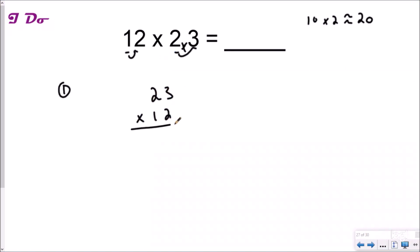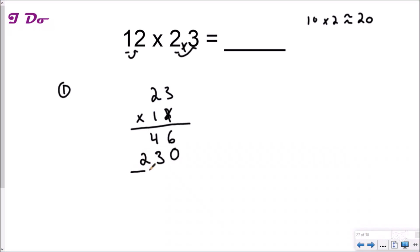We counted our decimal places and set it and forget it — kind of like that rotisserie chicken infomercial. Now I multiply like normal: 2 times 3 is 6, 2 times 2 is 4, cross out, add your zero. 10 times 3 is 30, 10 times 20 is 200. My product of 23 and 12 is 276.